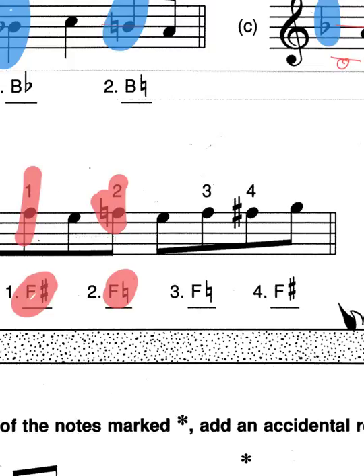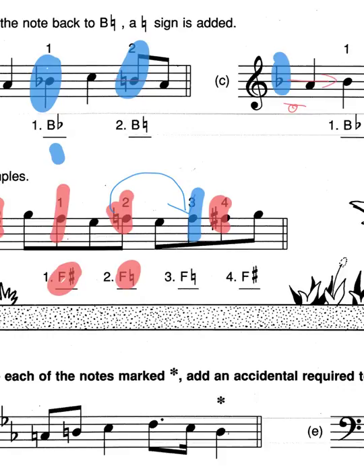Now, this is important. This next one is F-natural, because this natural continues onto there. So if you want to go back to F-sharp, even though it's in the key signature, you have to put the sharp back in front of them.